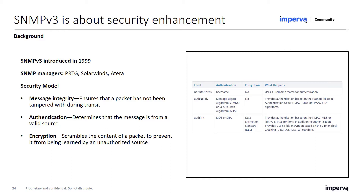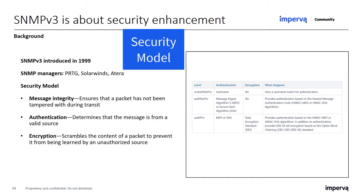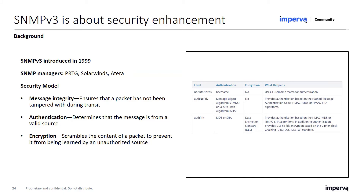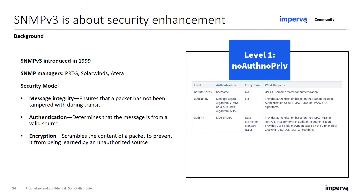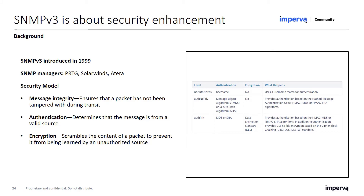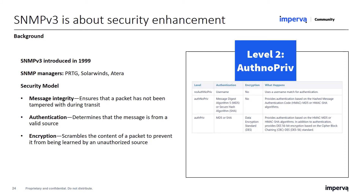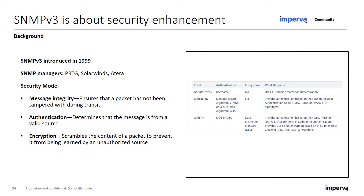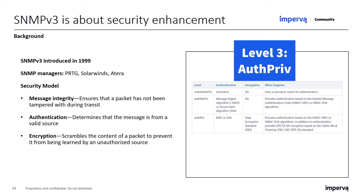Let's talk about the SNMP v3 security model. It is important to understand that security is the only issue SNMP v3 addresses — there are no other changes to the protocol and no new operations. Everything from previous versions is still supported. There are three security levels: the first is like version 2, matching a username on both sides; the second adds authentication based on MD5 or SHA algorithms; and the third adds encryption based on DES.